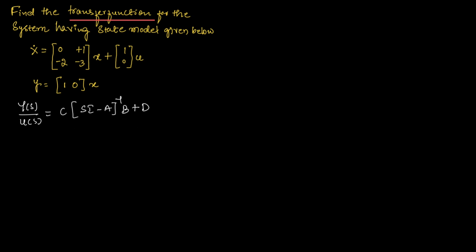If you observe the state equation, this matrix represents A and this matrix represents B. In the output equation, this matrix represents C. In these equations, we don't have the term D, so we can write the formula as Y(S) divided by U(S) equal to C into (SI minus A) inverse multiplied with B.